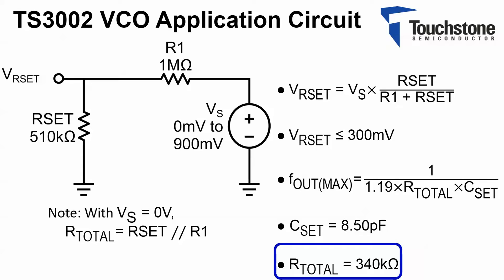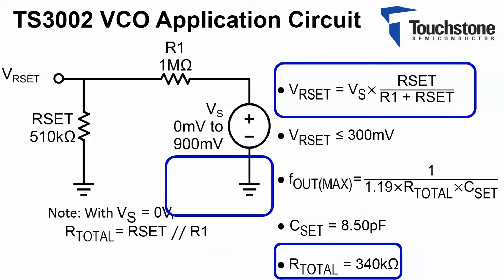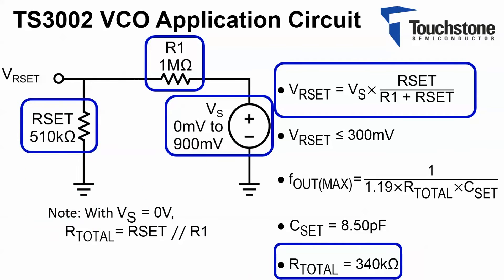Now considering the voltage divider equation and the maximum value for the VS voltage range, the two resistor values R1 and RSET can now be found. Keep in mind their parallel equivalent must be approximately equal to 340 kΩ. Now let's take a look at some of the waveforms on the scope from the Fout pin while varying the VS voltage.